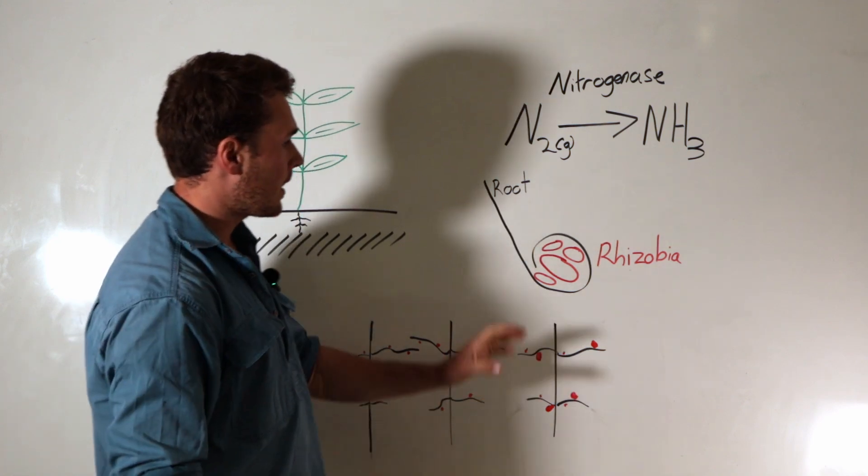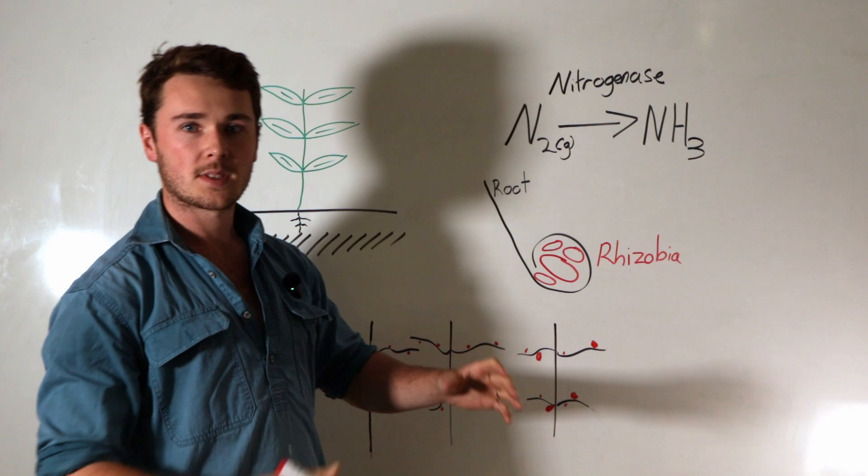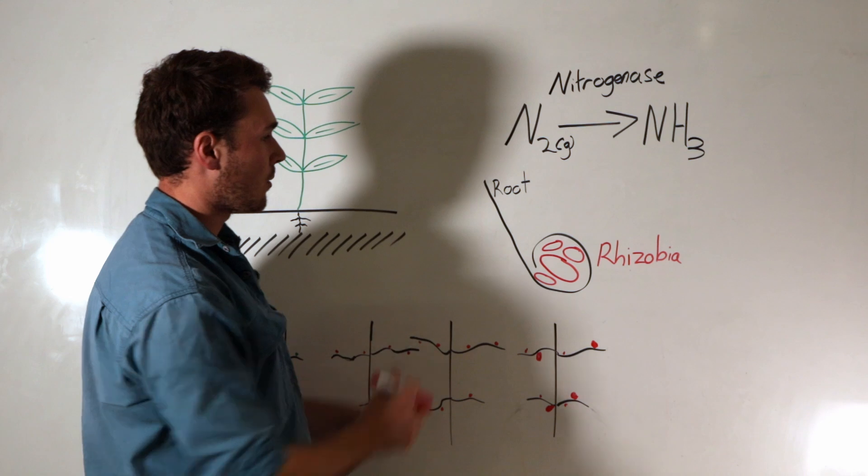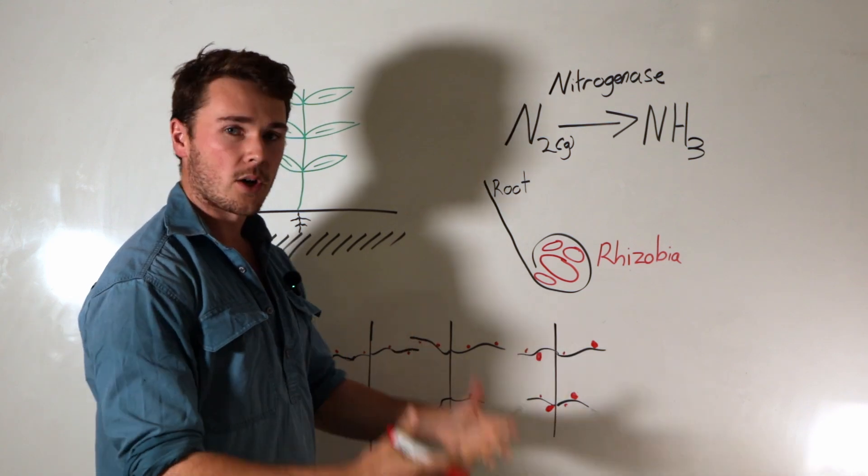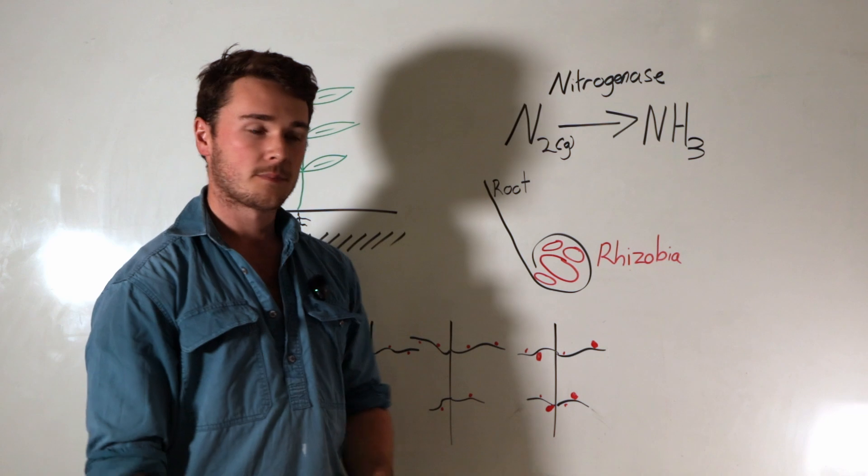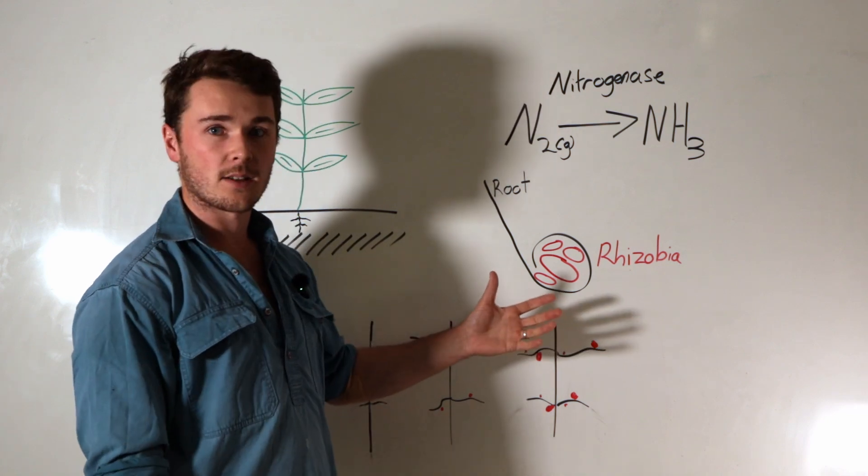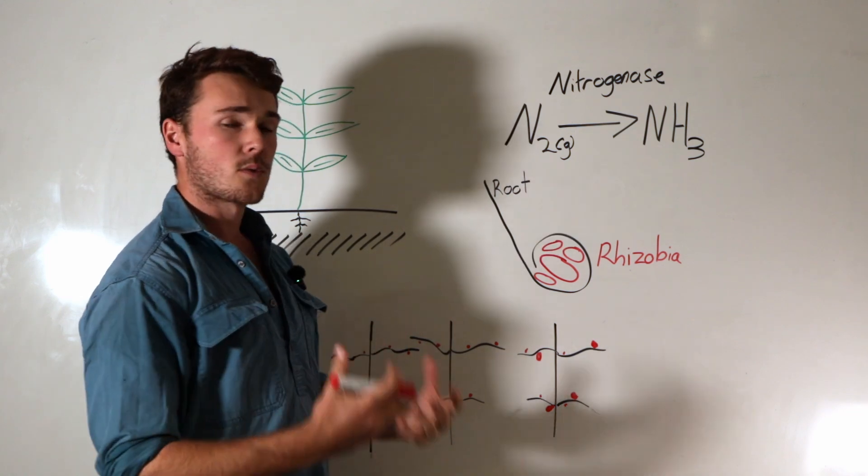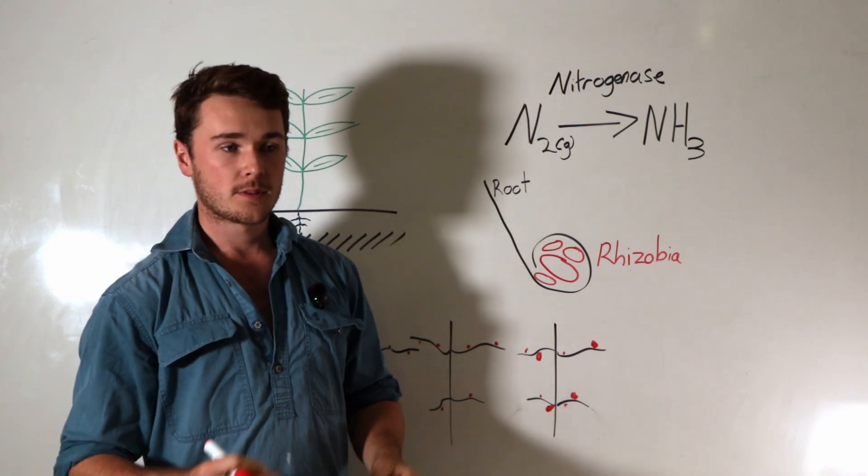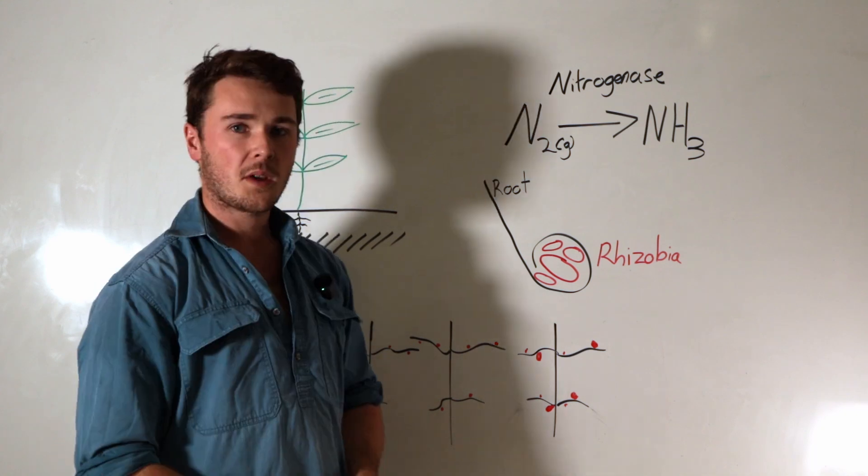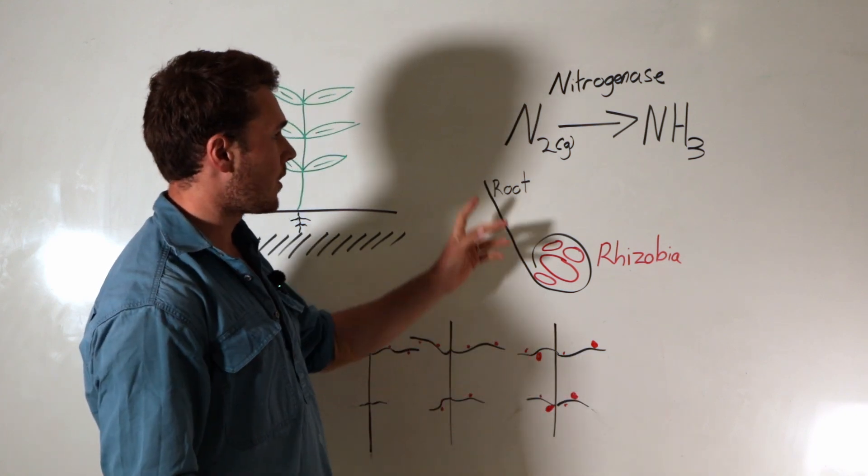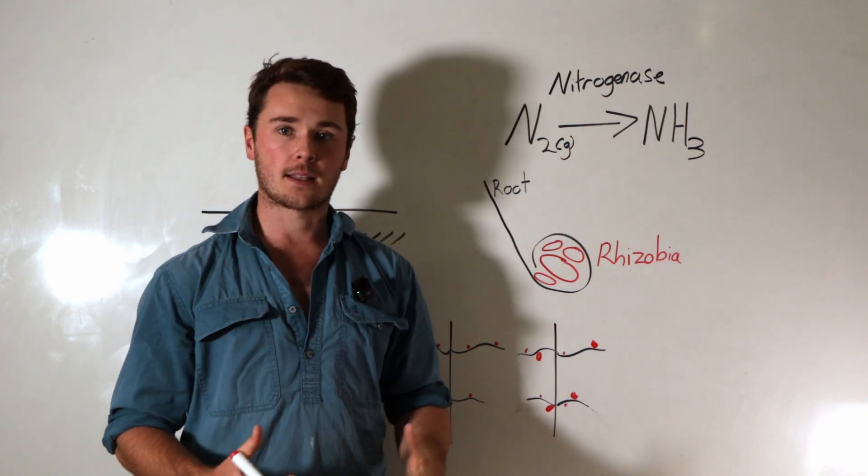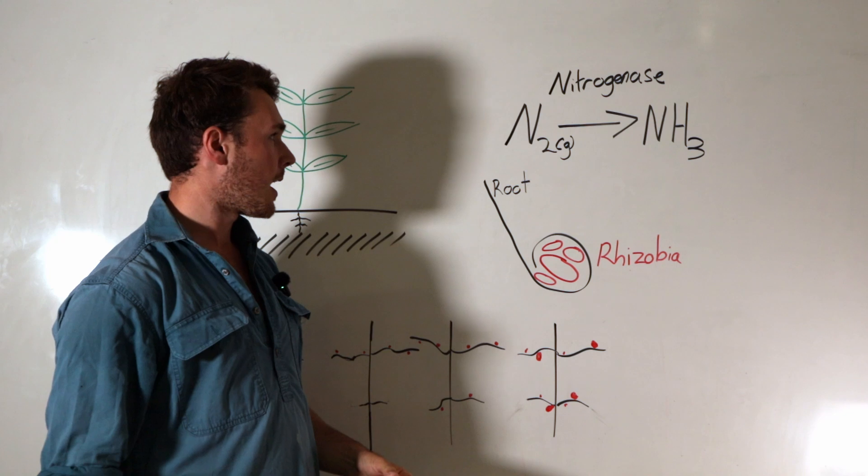From here, the rhizobia bacteria takes in nitrogen gas. The plant actually feeds the rhizobia with carbohydrates and food so that it can perform this function. I think it takes around 16 or so ATP for this process to occur, so it's quite an energy intensive process but you get free nitrogen out of it. The rhizobia bacteria will convert nitrogen gas into ammonia where the plant can then convert that into amino acids for use.